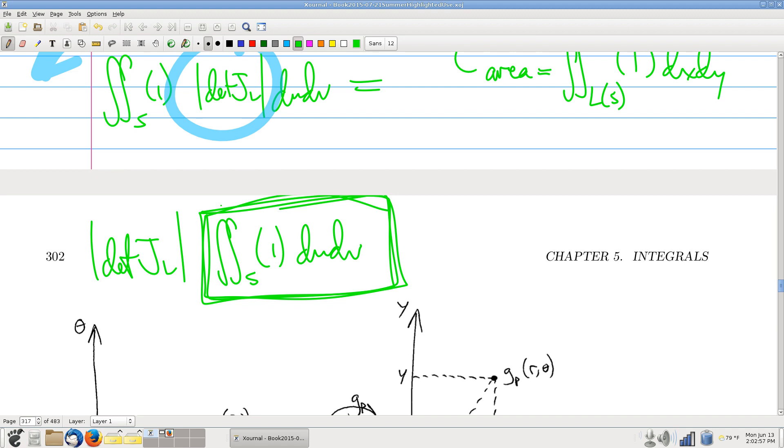the unit square is a rectangle. We know that it bounds. The integrand is one. This is one. Does that make sense to everybody?